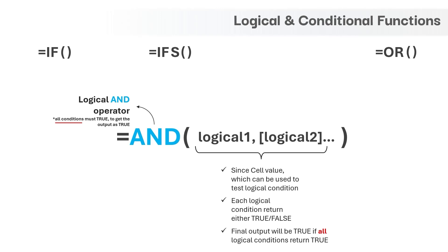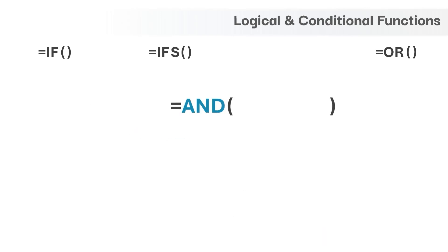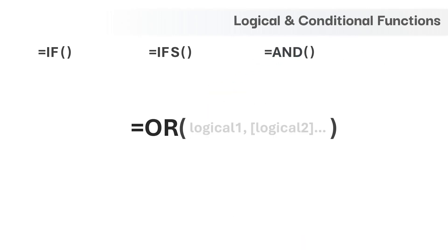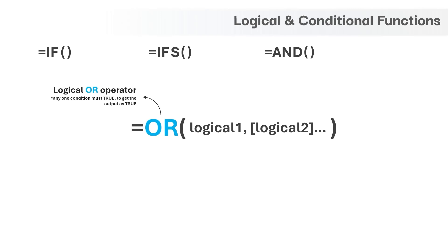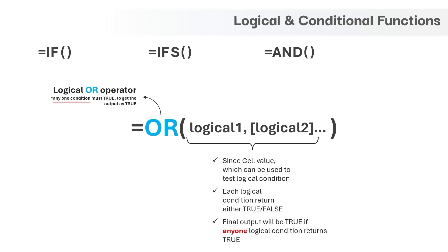Typically we use the AND function in combination with the IF function to test multiple conditions and then take action accordingly. The last function is OR and it is almost similar to the AND function. The only difference is the AND function requires all the logical conditions to be true to get the final output as true, while the OR function requires any one logical condition to be true to get the final output as true.